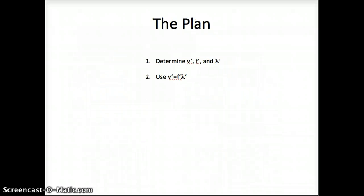Okay, now that we have all our notation, the plan is I'm going to determine v prime, f prime, and lambda prime, and then I'm going to use our normal equation for relating these quantities, v equals f lambda. I'm just going to write that equation down in terms of these new variables. I'll do this for a source moving and for the listener moving.